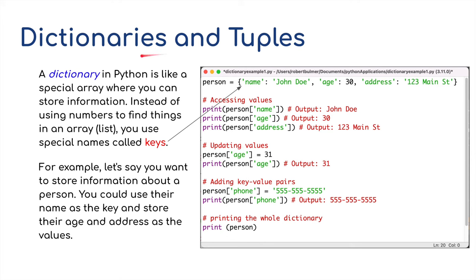I just want to finish off by talking about dictionaries and tuples, which are another kind of array, a kind of list, that's used in Python, and it might be useful when you come to do any programming tasks to use one of these instead of using a list. So a dictionary, for example, in Python is like a special array where you could store information. Instead of using numbers to find things in an array, or a list, you can use special names called keys. For example, let's say that we want to store information about a person. You could use their name as the key and store their age and address as the value. So, for example, here, we've got curly brackets for dictionaries, unlike the square brackets for lists, and I'll explain that in a moment. So all this information is stored in this one dictionary item here.